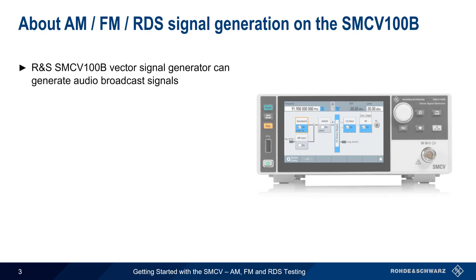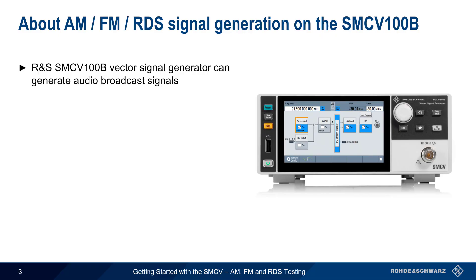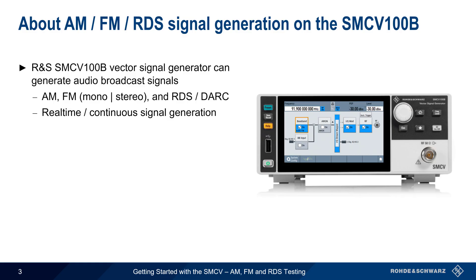The Rohde & Schwarz SMCV100B is a compact vector signal generator that can be used to generate a wide variety of both audio and video broadcast signals. This includes standard analog AM and FM signals, as well as FM signals containing digital RDS and DARC subcarriers. These signals are generated continuously, in real-time, using either an internal or external modulation source.